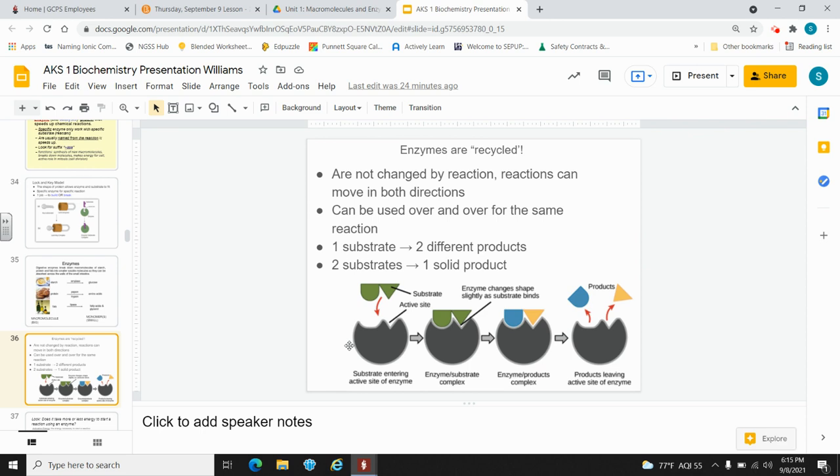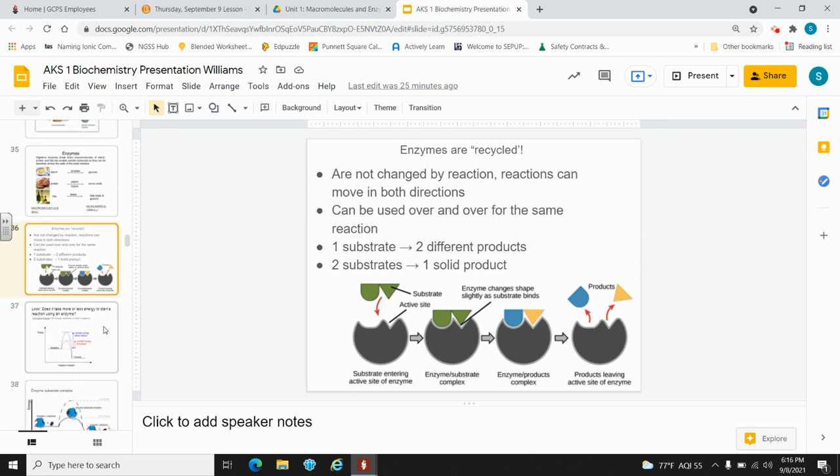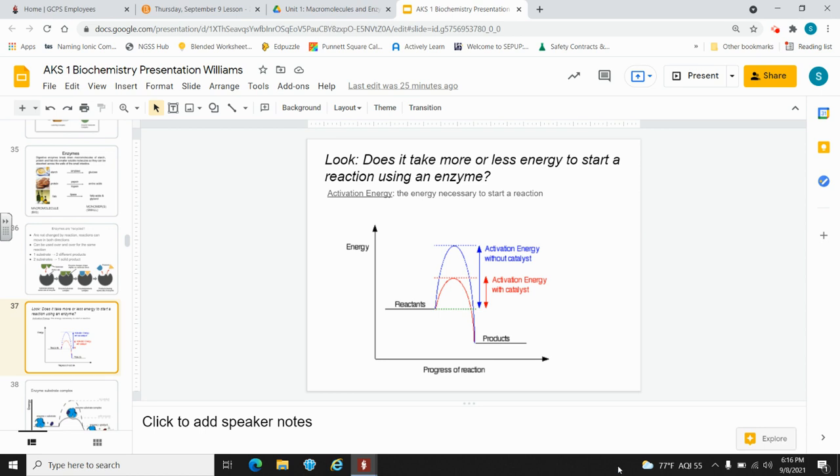So we've talked a lot about, so far, how enzymes help reactants get together. And they speed up chemical reactions. But what does that really mean? How do they really speed up chemical reactions? Well, it has to do with something called activation energy. So on your paper, on page two, you have this same diagram. And question four says, does it take more or less energy to start a reaction using an enzyme? And then you're supposed to circle or highlight the answer. So that the answer is, it takes less time. If you're speeding up a chemical reaction, it takes less time for that chemical reaction to happen. And then the next question is, what is activation energy? Activation energy is the energy necessary to start a reaction. So write that down.